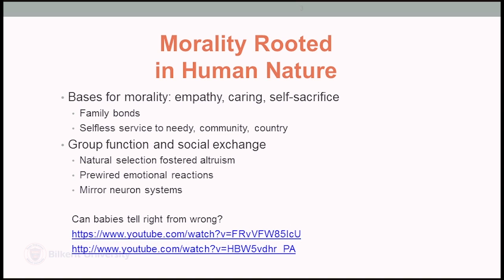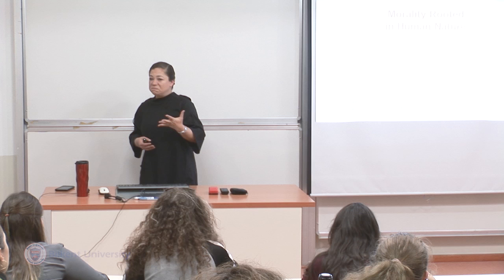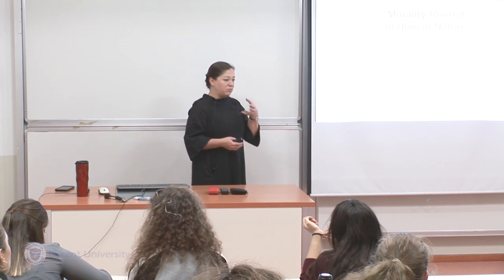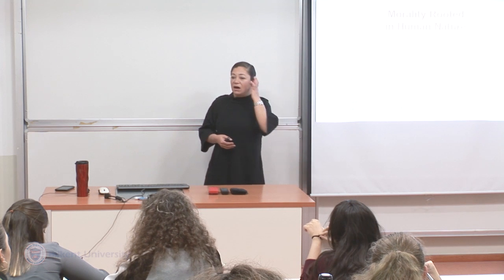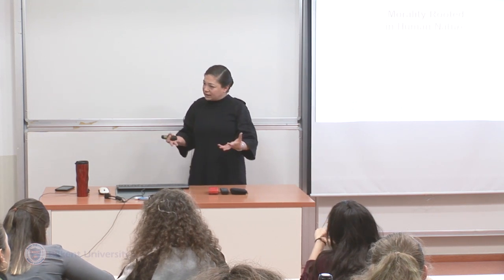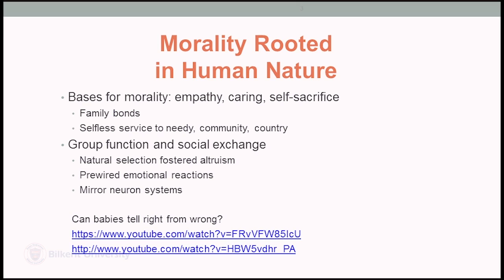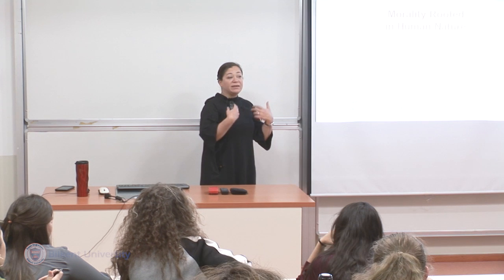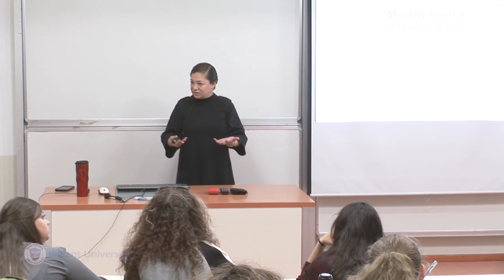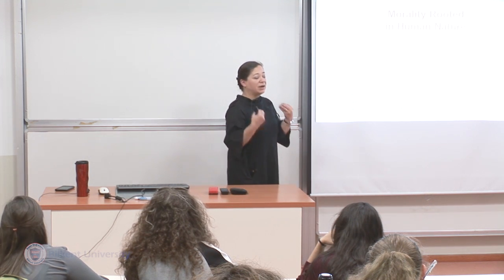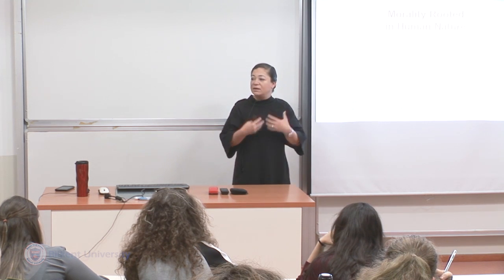There is an evolutionary way of thinking suggesting that natural selection fostered altruism. We have pre-wired emotional reactions, meaning certain parts of our brain are more active in processing moral problems. These seem to be more or less the same areas from one person to the next, suggesting there might be some structural foundation for moral reasoning. Mirror neuron system research, for example, suggests that when we see somebody in pain, the areas of our brain active when we experience pain are also activated, which seems to suggest a neural foundation for our feelings of care and compassion for others.